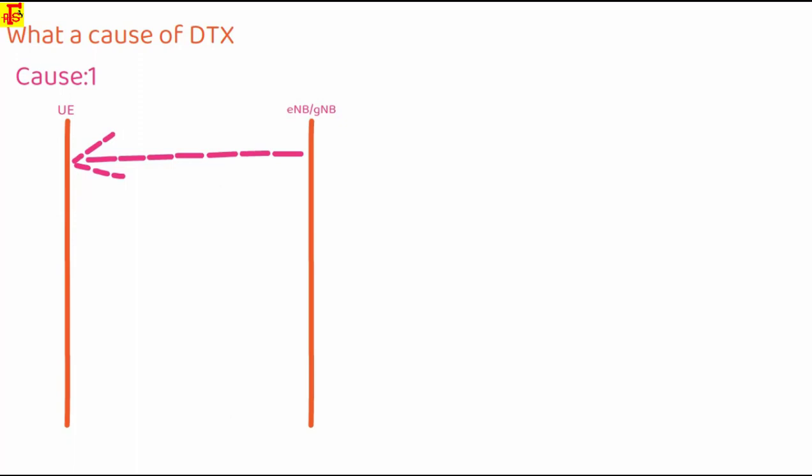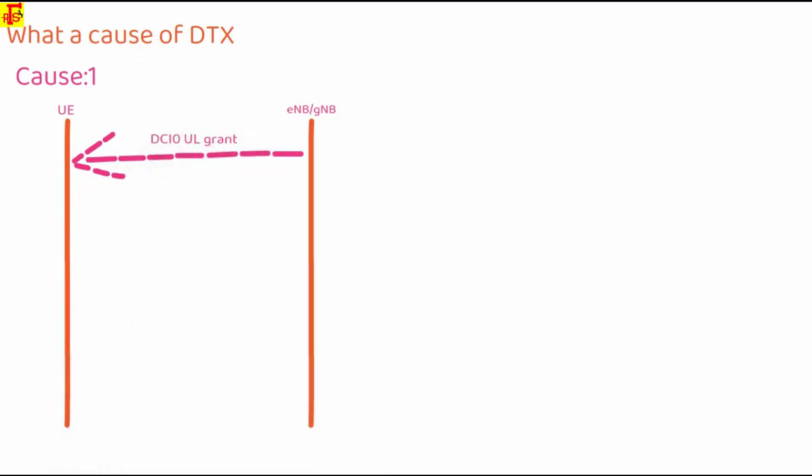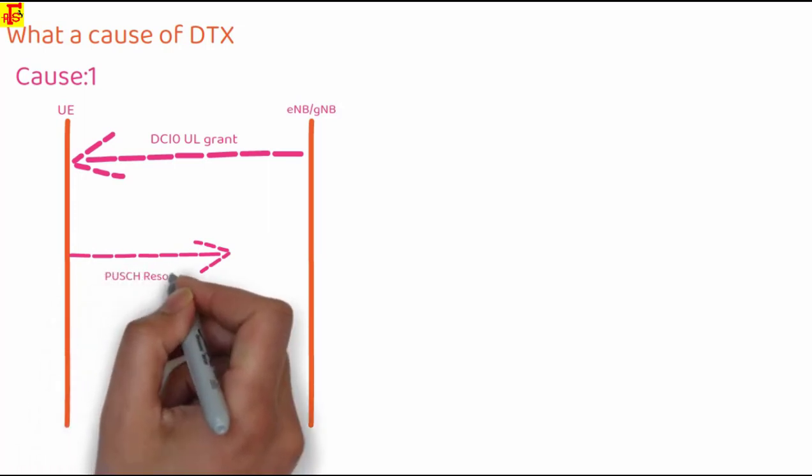In simple terms, eNodeB sends an uplink grant to UE. Suppose you want to send something, so you require a grant from the eNodeB. UE sends an uplink packet at allocated PUSCH resources. But if there is no uplink signal received, or eNodeB does not receive the uplink signal, you can say there is no energy detected at allocated PUSCH resources.